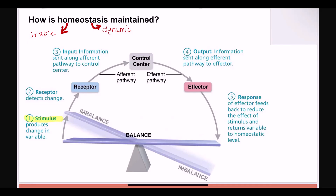The stimulus is detected by something — that's step two — and that happens with the receptor. A receptor is something that detects that change. It's going to notice the change and relay that information. That relay step is called input, step three. So the receptor sends that information up the line — that's input, done along the afferent pathway. Afferent means going towards the important thing, and in this case the afferent pathway takes us via input to the control center.